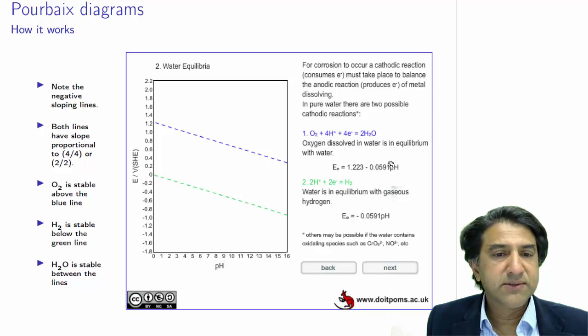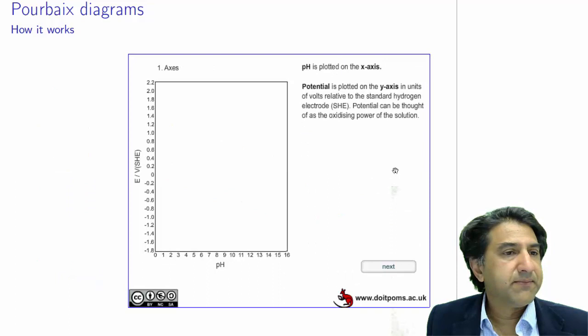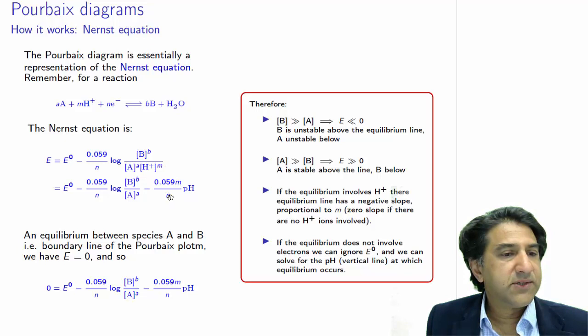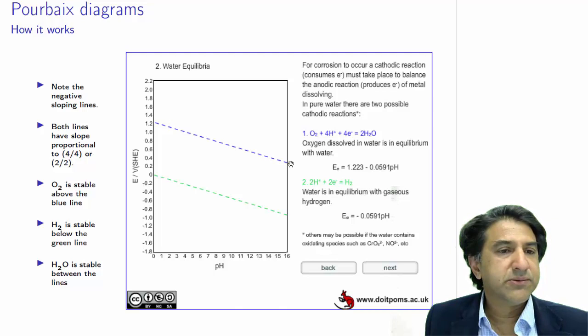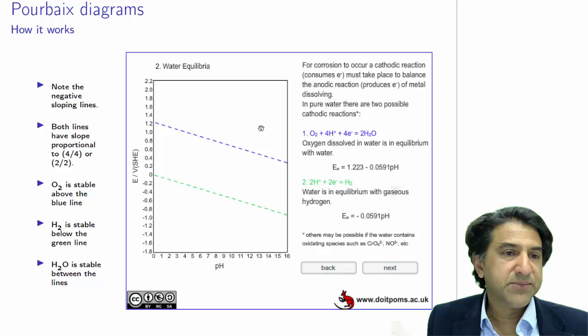E equals E0 minus 0.0591 divided by N. M on N pH. M on N pH. In this case, we have 4 in 4 times pH. So we have a sloping line of minus 1 times the pH. So here is the line here in blue. Above the line, we have O2 being stable. So O2 is produced. That means to say the water is decomposed into oxygen. Below the line, water seems to be stable.